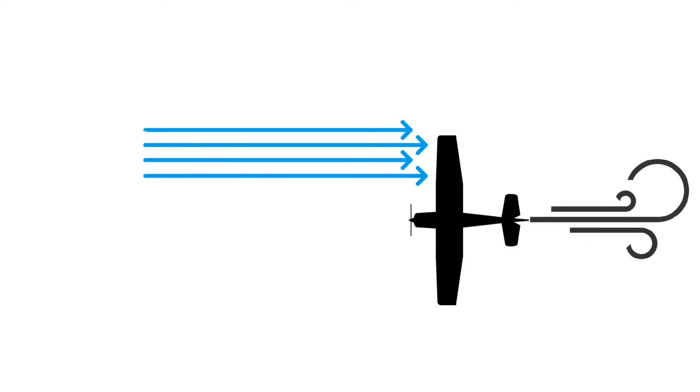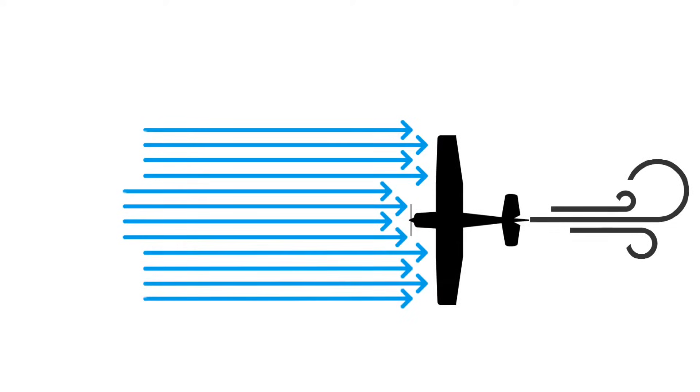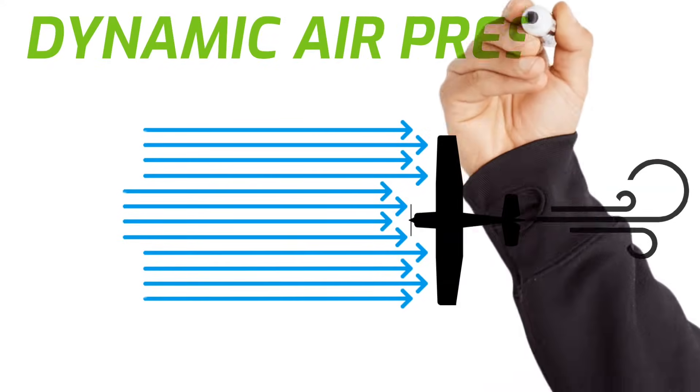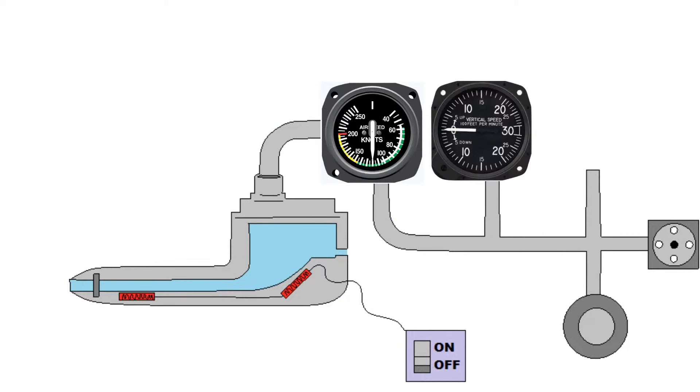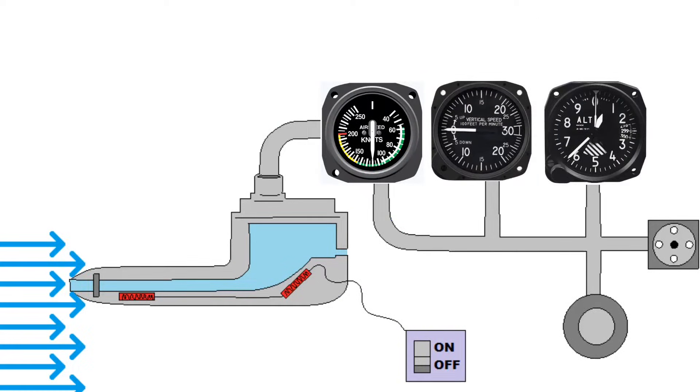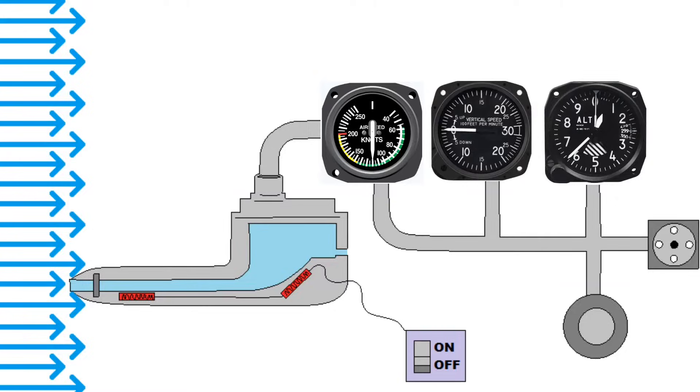Now anytime an object like an airplane moves through the air, it's impacted by the air molecules that it's traveling through. And this creates a certain amount of pressure on the object that's equal and opposite to the airplane's direction of travel. And this is called dynamic air pressure. And in order to understand how the pitot-static system works, you have to understand that this pressure is directly related to the speed at which the aircraft is flying.